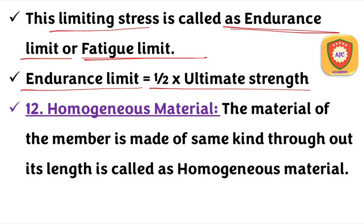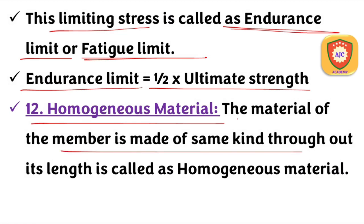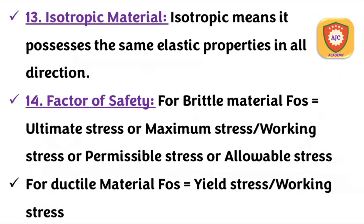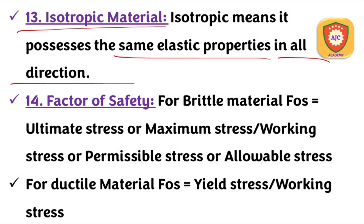A homogeneous material is made up of one kind of member — for example, iron. An isotropic material has the same elastic properties in all directions.